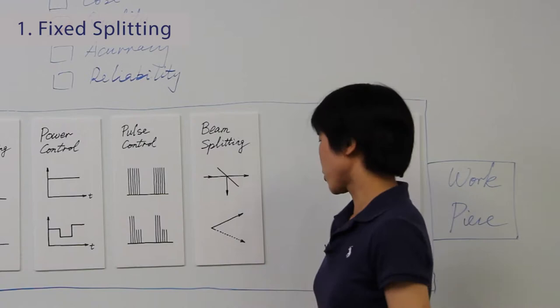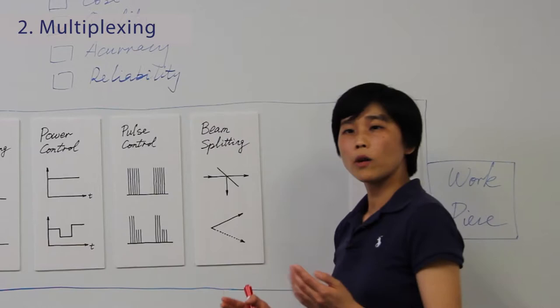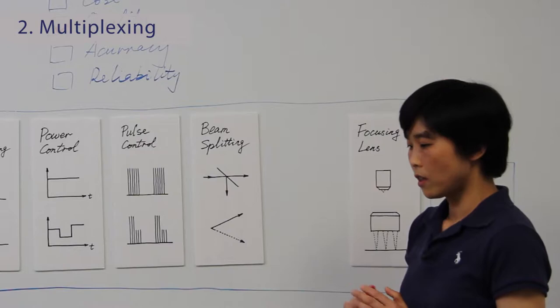Also, we can do multiplexing. Basically, we're sharing the laser power between different process heads. This will also improve the throughput.